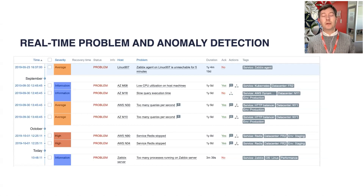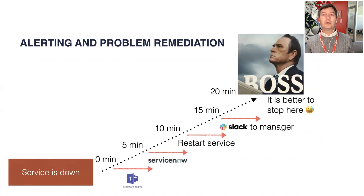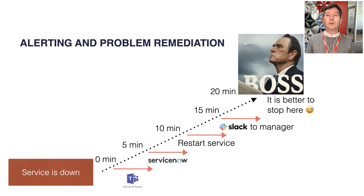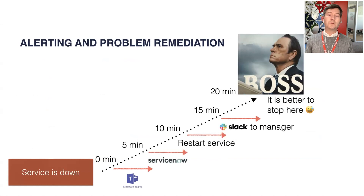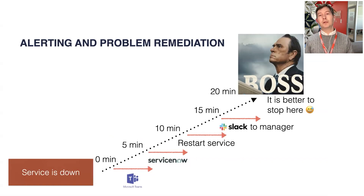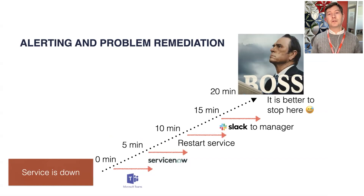So we can solve it in advance, thus preventing different downtimes or degradation of our services. And of course, alerting can include problem remediation. For example, if Zabbix detects a service is down or is about to be down, Zabbix will start to alert you. It may give you a message in Microsoft Teams, maybe after some time escalate the problem to a higher level, try to restart your server automatically, or open a ticket somewhere — and this problem will be escalated until it is fully resolved.